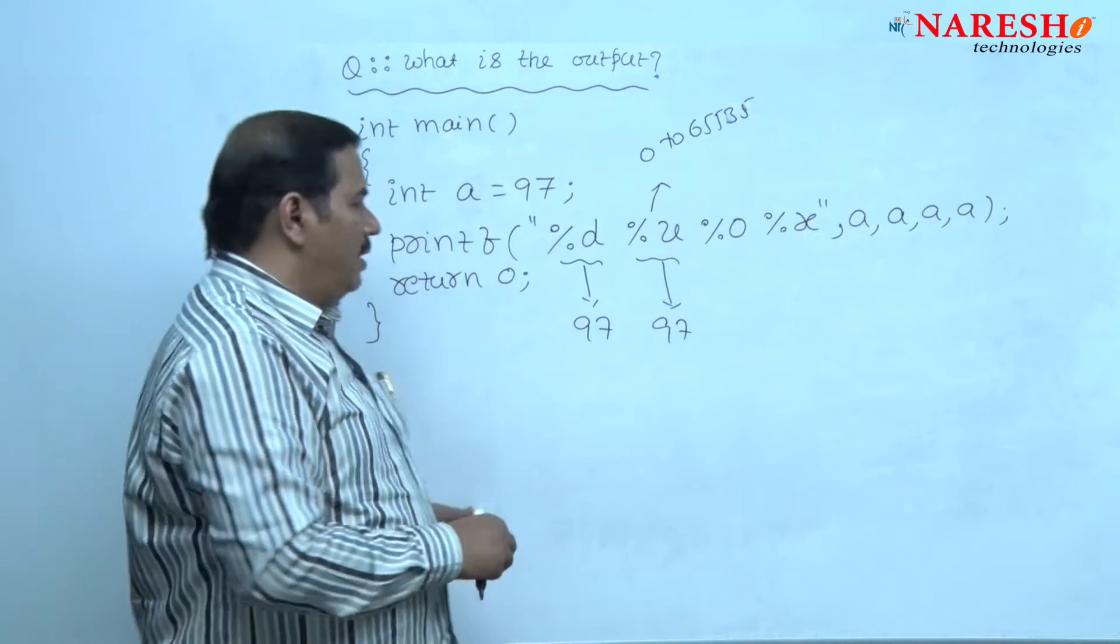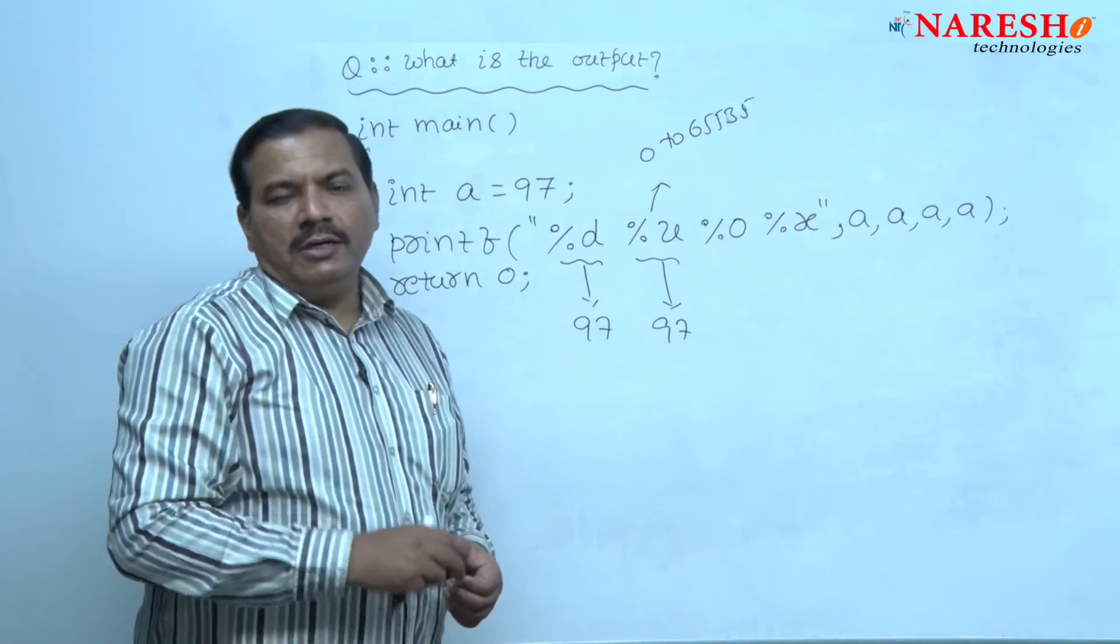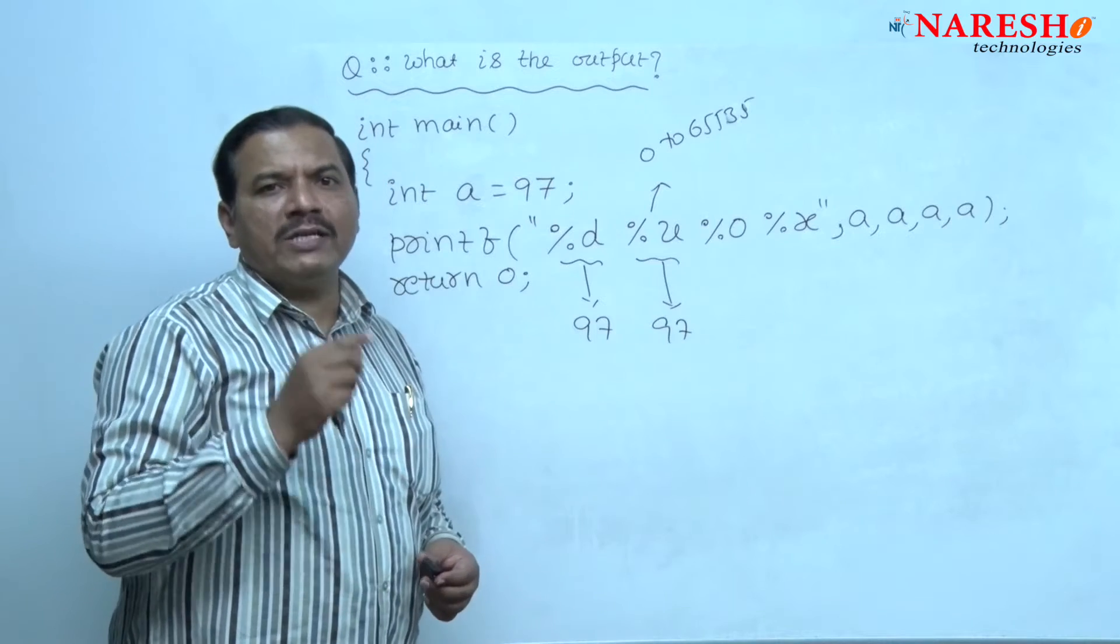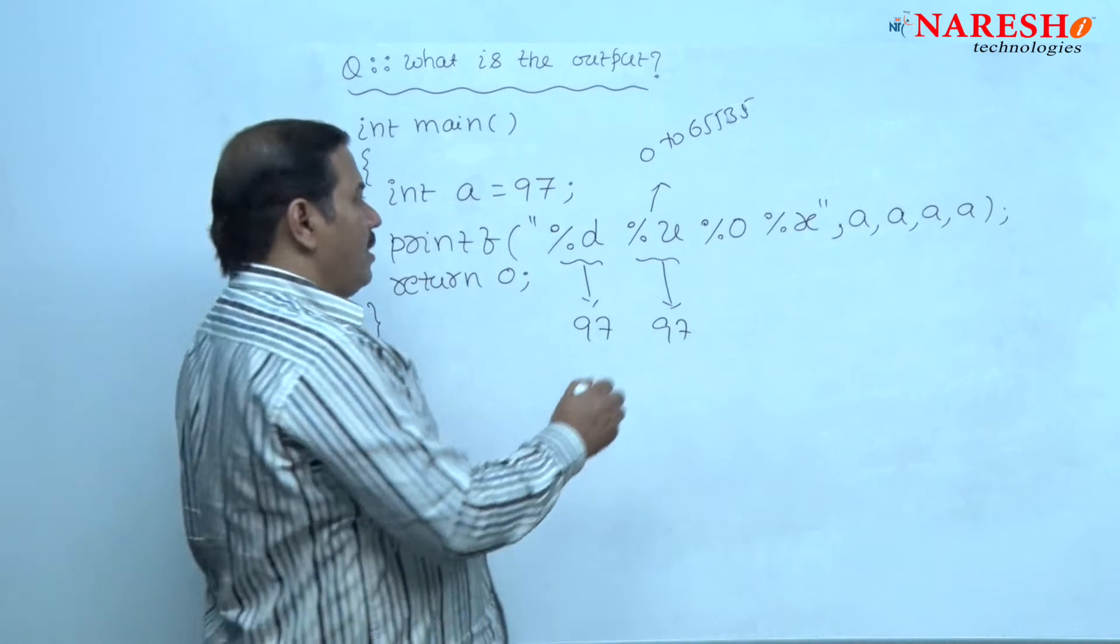Of course, the number 97 is existing in between this range. Hence, even if we are using format specifier %u, same number is printed.